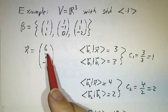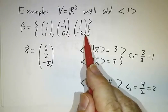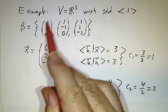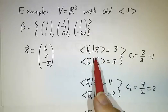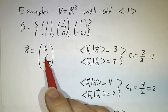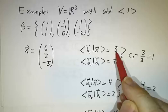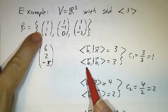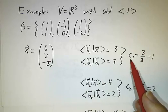If somebody gave us the vector (6, 2, -5) and said to decompose it in this basis, you could set up three equations and three unknowns and row reduce, or set up the change of basis matrix and invert it. But it's easier to just use inner products. The inner product of b1 with x is 6 + 2 - 5 = 3. The inner product of b1 with itself is 1 + 1 + 1 = 3. So 3 over 3 is 1, and our first coefficient is 1.